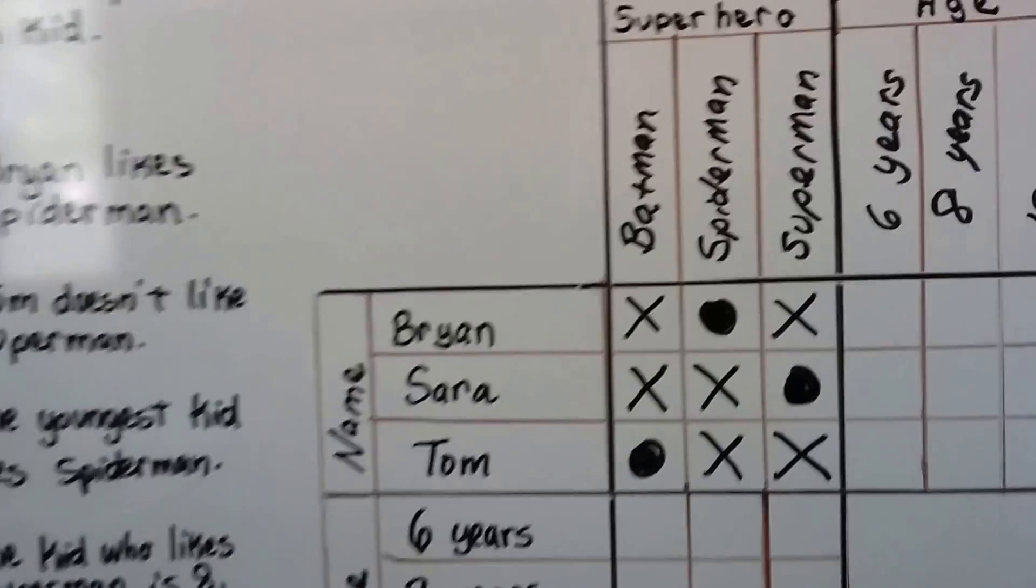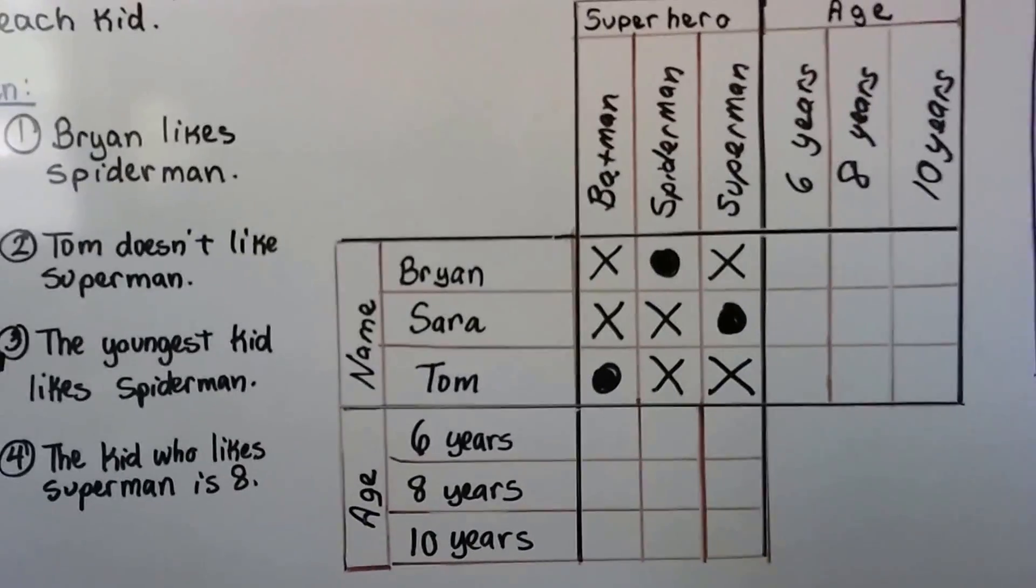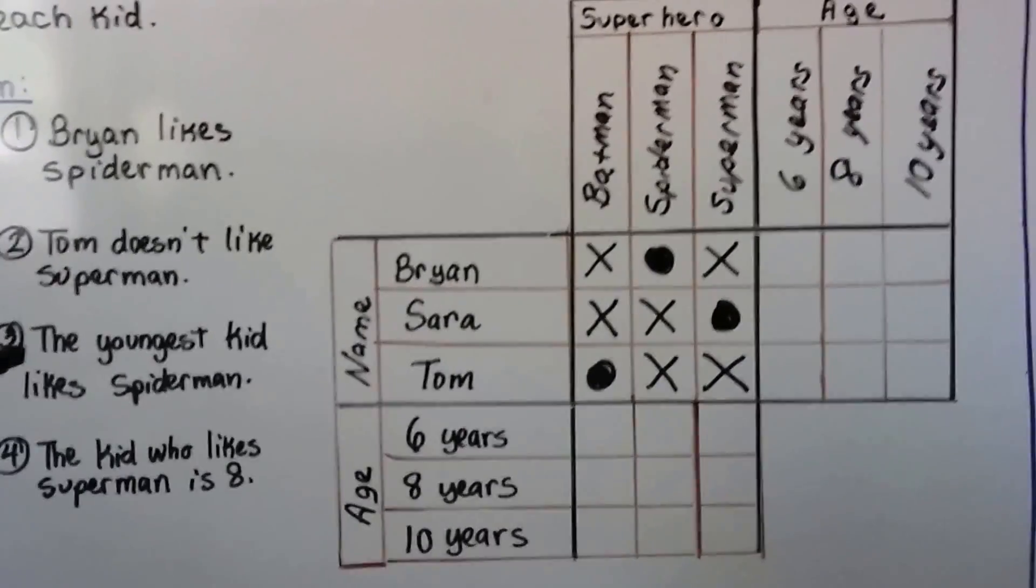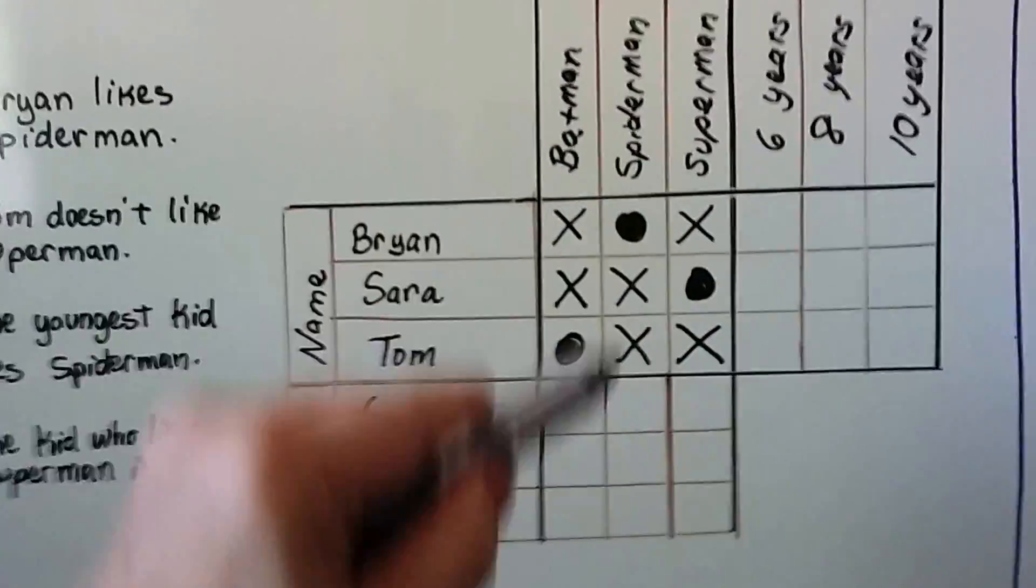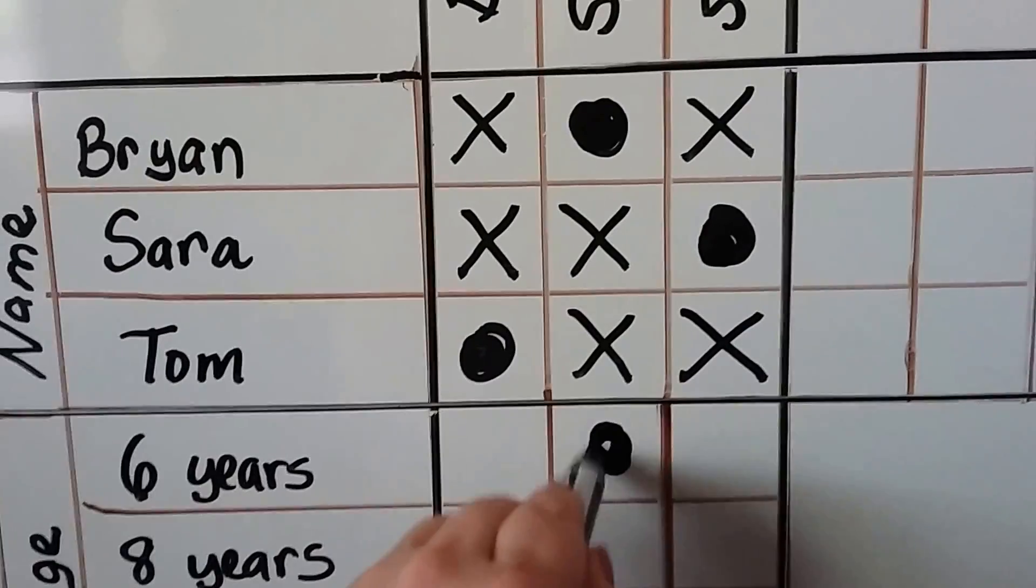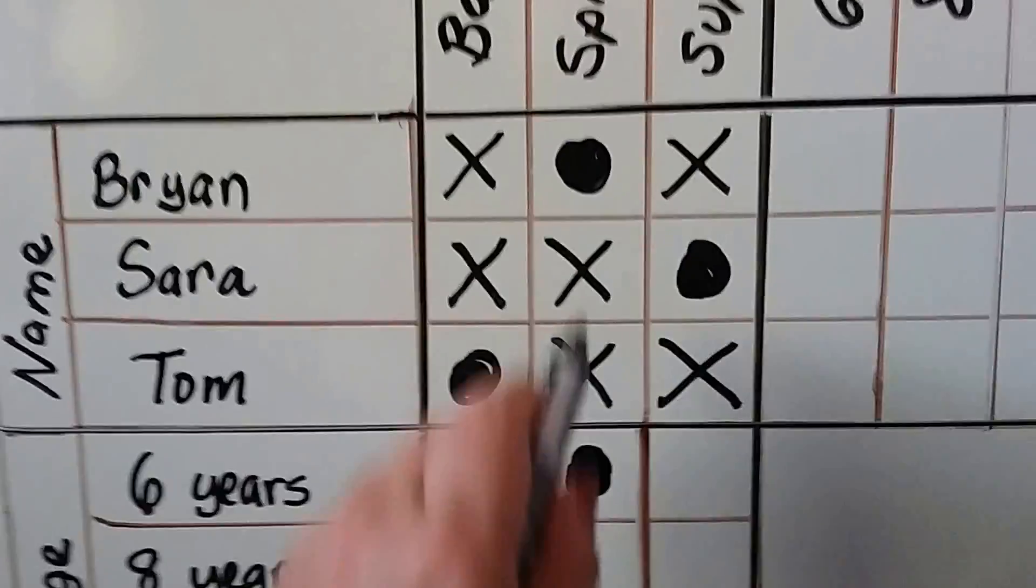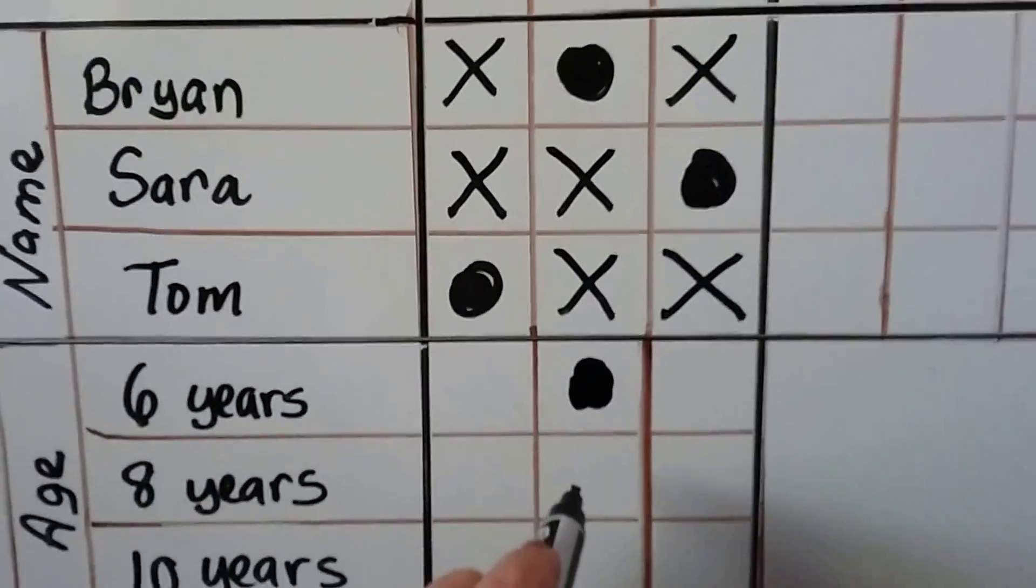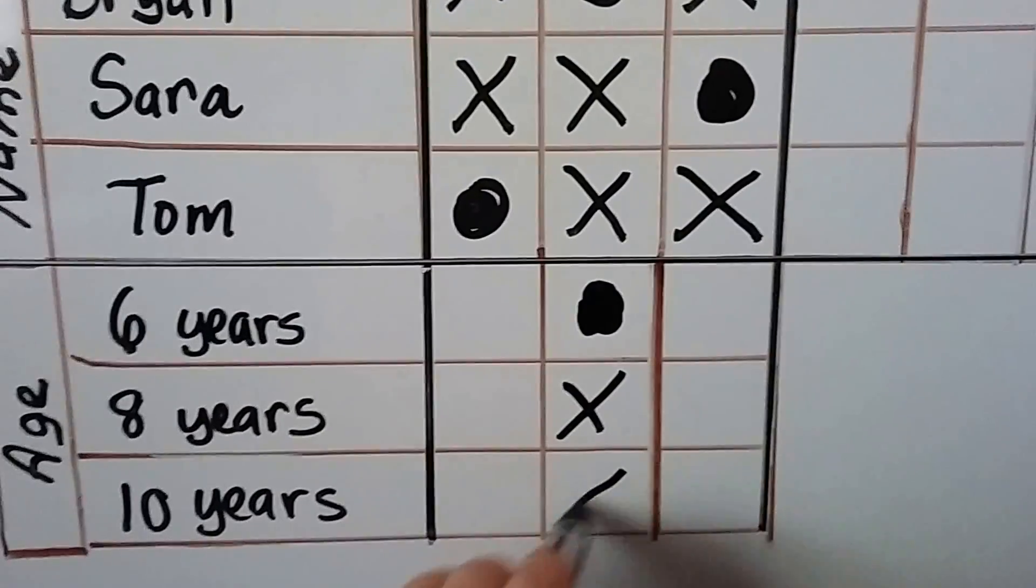Now we need to figure out their ages. It says the youngest kid likes Spider-Man. So Spider-Man is the youngest, that would be the six-year-old. And if the six-year-old is Spider-Man, then the eight-year-old is not, the ten-year-old is not.